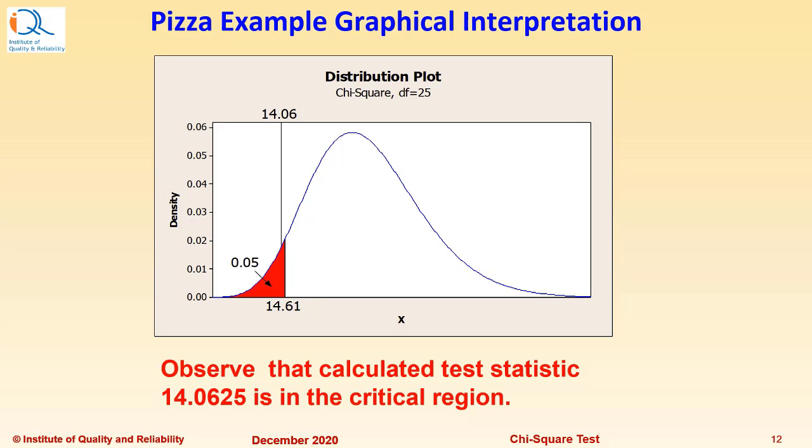This is a graphical representation of the situation. Observe that calculated test statistic 14.0625 is in the critical region and is to the left of the critical value 14.611.